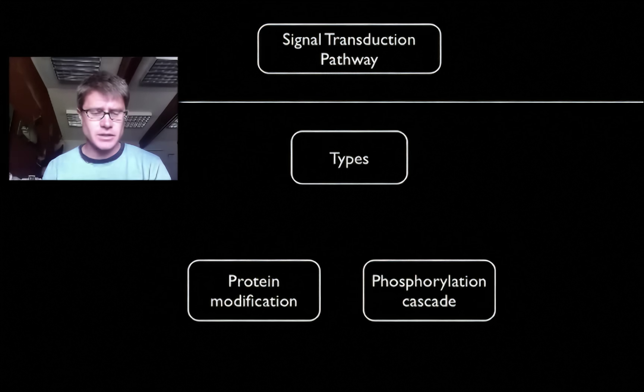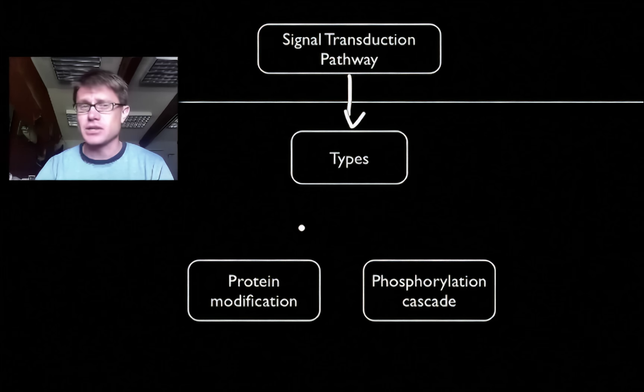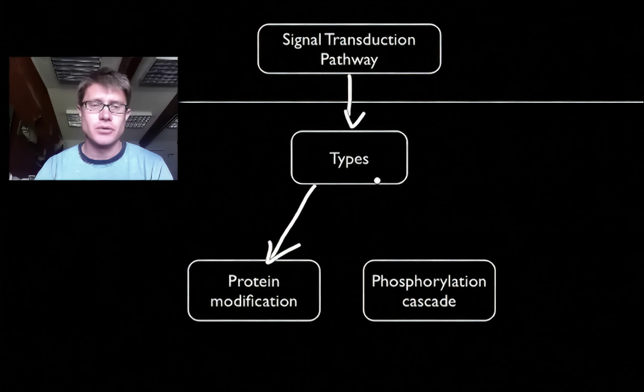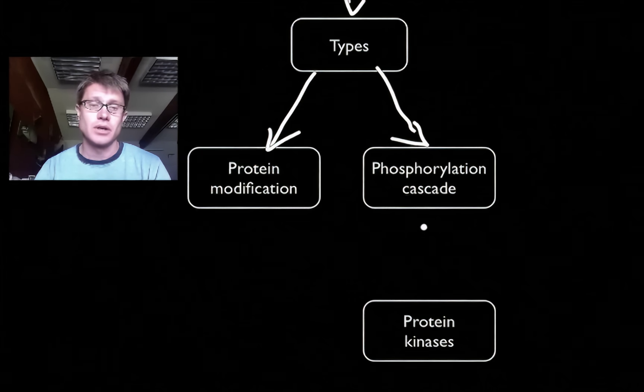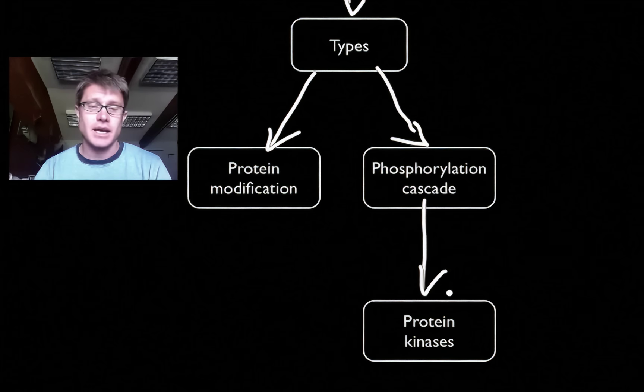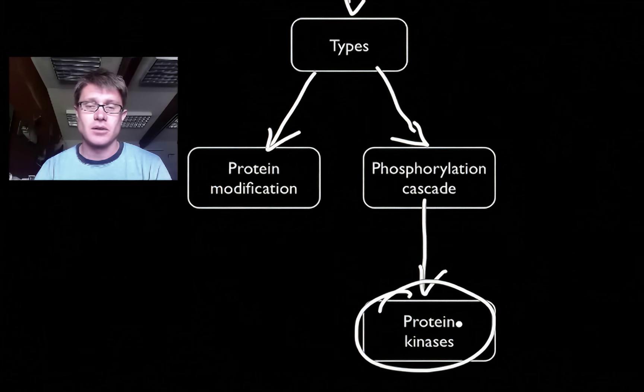And so signal transduction pathways all work in the same way. And there are a couple of ways that their actions work. Sometimes they'll actually modify a protein or change the shape or the conformation of a protein. But mostly what they'll do is there will be what's called a phosphorylation cascade. In other words, a phosphate group, which remember carries energy, will be passed off from one chemical to another to another to another until it eventually has an action. And protein kinases are important in that.